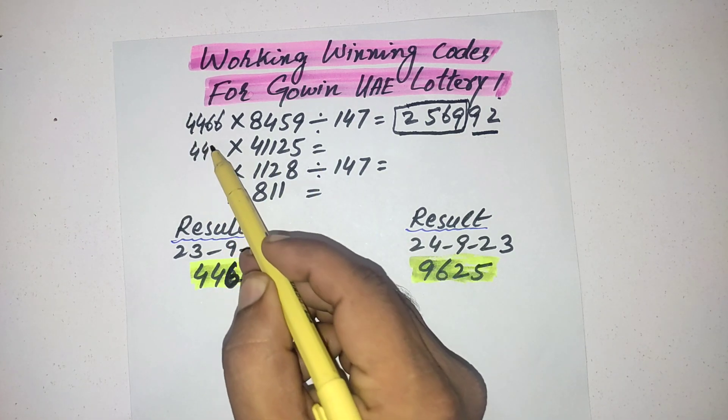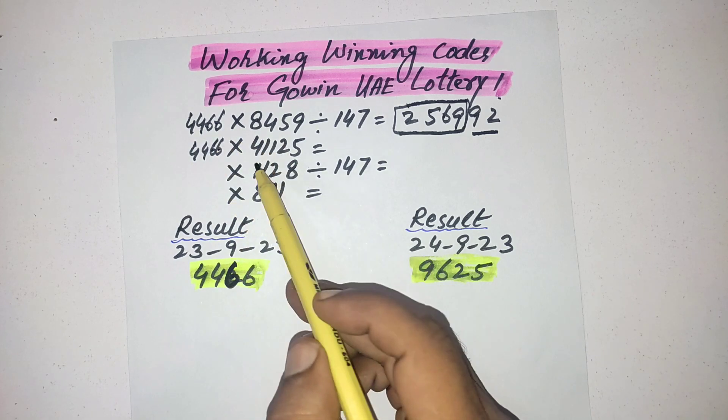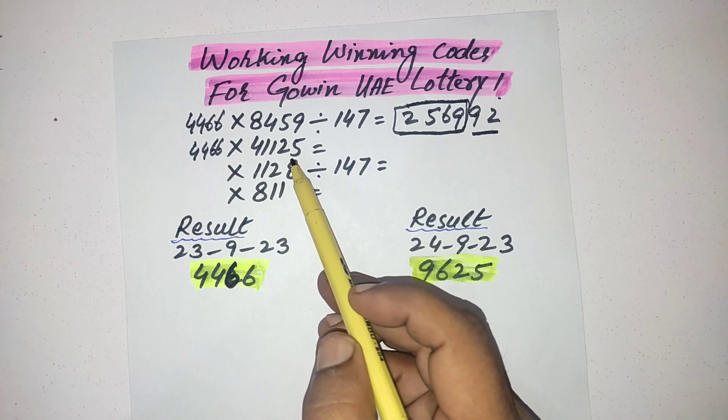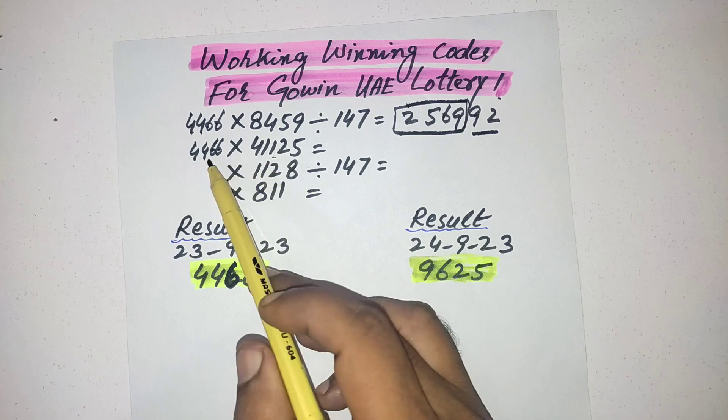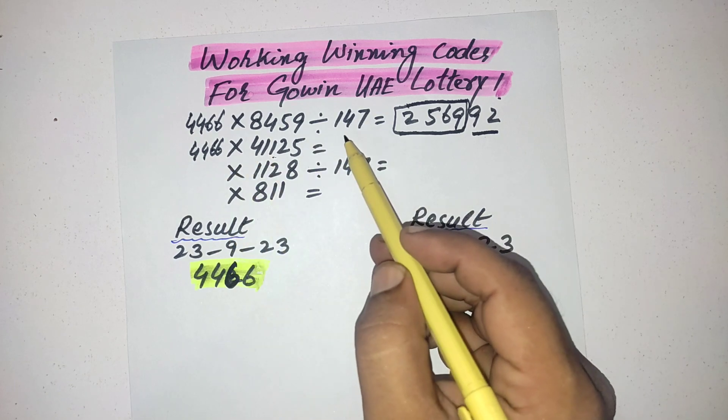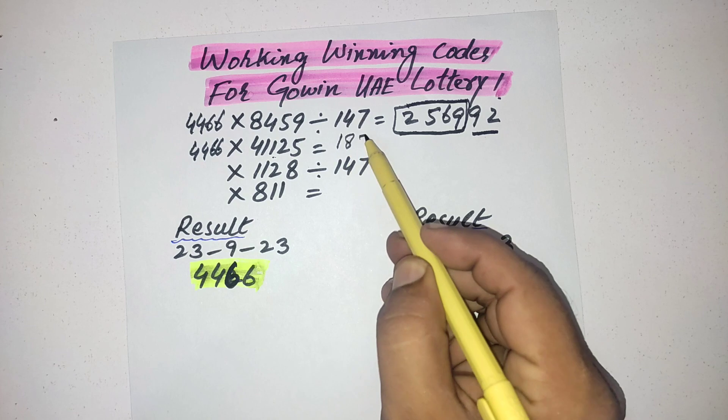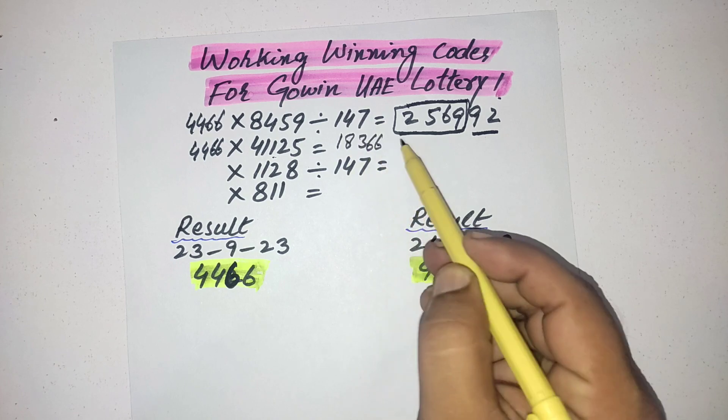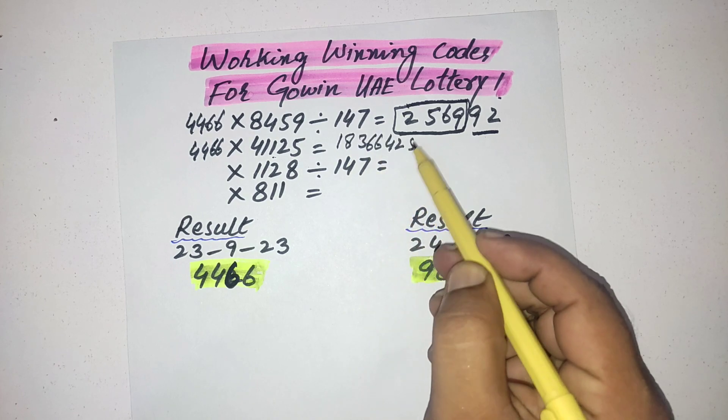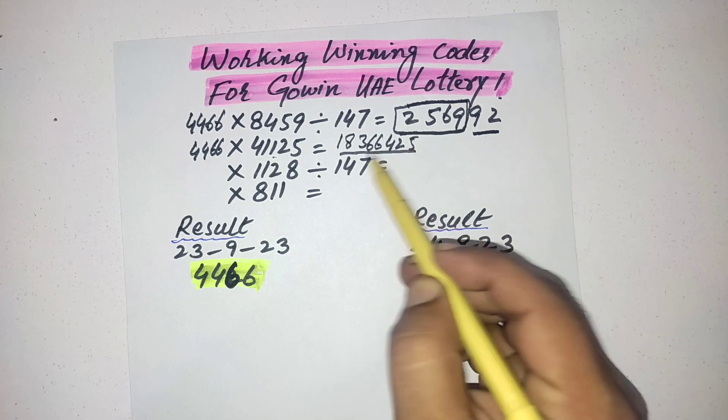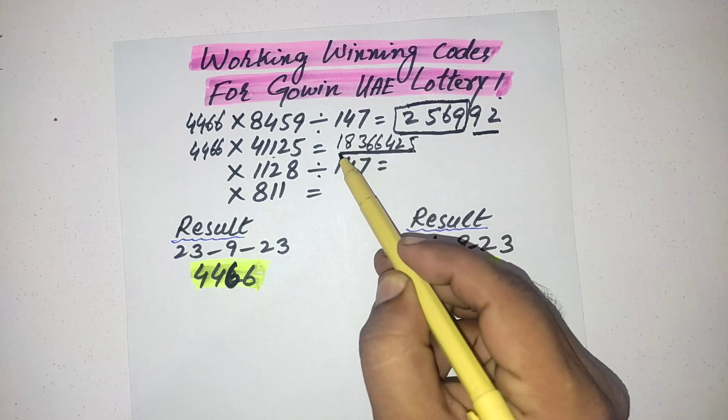Simply multiply the result with 4125. Multiplying this code with the result, the answer is 18366425.